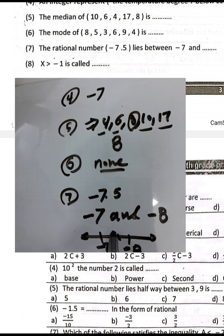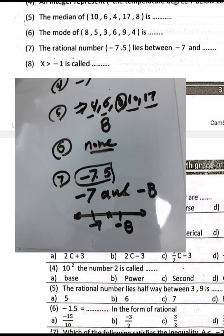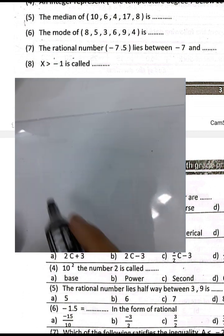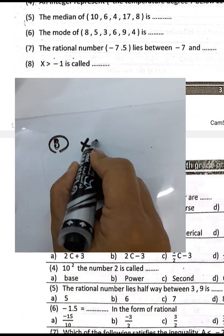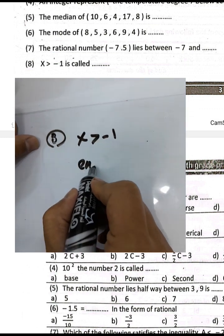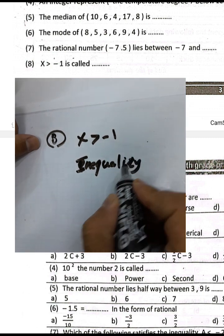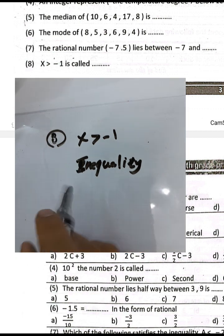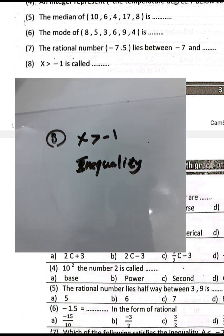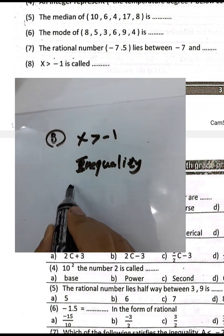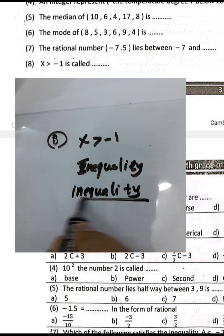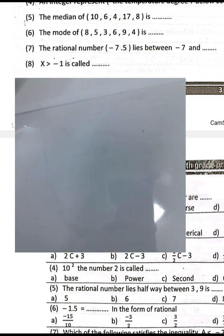Question number seven: the rational number negative seven point five lies between negative seven and negative eight, because negative seven and a half lies between them. Question number eight: x greater than negative one — we call this an inequality.